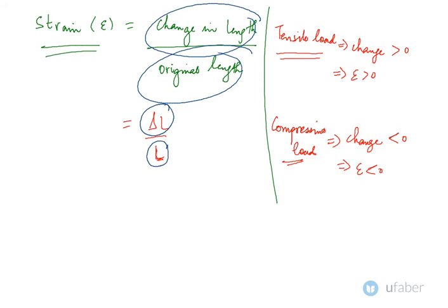If you have tensile load acting, the change in length is always positive because the length increases, and therefore the strain induced would always be positive. When you have compressive loads, the change in length would always be negative because there is some decrease in the length.